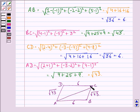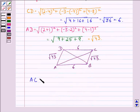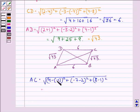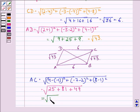Now we find out diagonal AC and diagonal BD. AC is the distance between points A and C. AC is equal to square root of (4 minus minus 1) squared plus (minus 7 minus 2) squared plus (8 minus 1) squared. This equals square root of 25 plus 81 plus 49, that is equal to square root of 155.